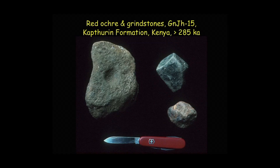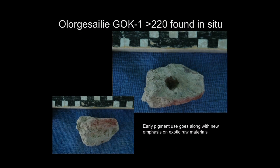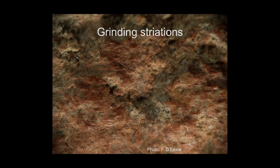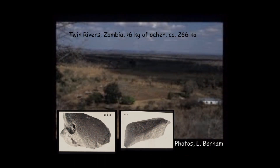The last topic is pigment. From the Kapthurin there is a grindstone with ground fragments of ochre. From Elorga Sali, there is a lump of what we now think is an iron-rich mineral ground on one side to release a powder — you can see the grinding striations. And from Twin River, Zambia, there are many kilos of ochre — more than six kilos — in little pieces, many of which have been ground.